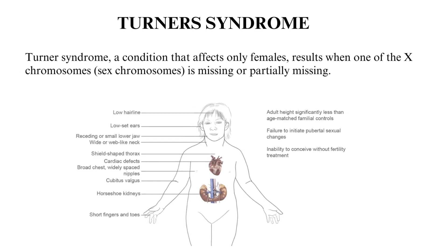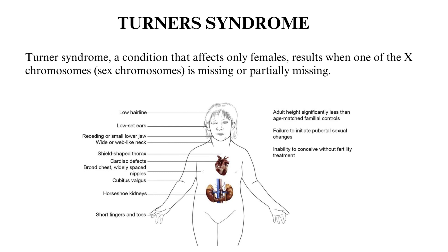Turner's syndrome is a condition that affects only females, resulting when one of the X chromosomes is missing or partially missing. It is a chromosomal condition that affects development in people who are assigned female at birth.